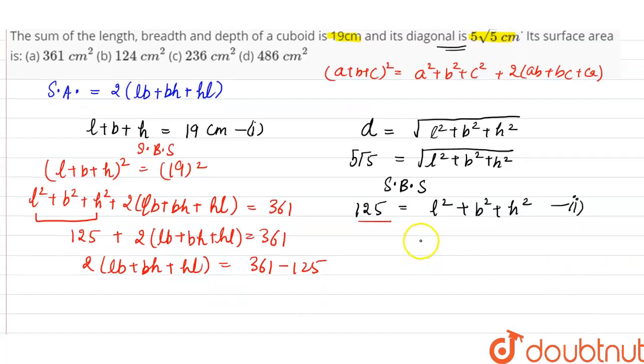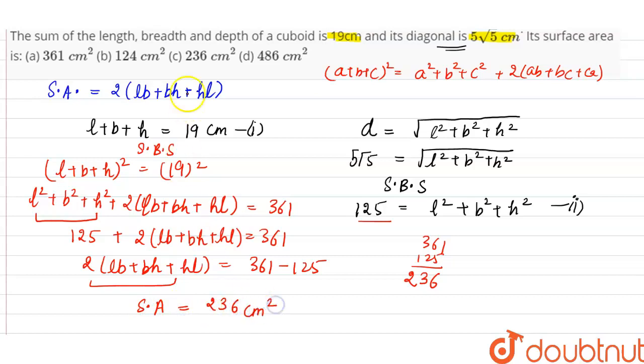So let's calculate 361 minus 125: 11 minus 5 is 6, 5 minus 2 is 3, 3 minus 1 is 2. So we can say this is the surface area of cuboid. So surface area of cuboid will be equal to 236 centimeter square. From options we can say that the correct option is option C.